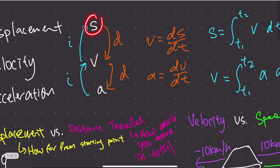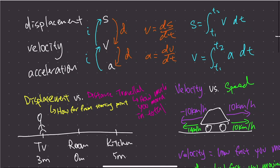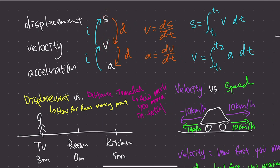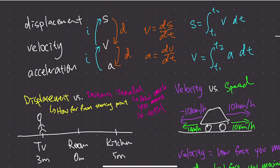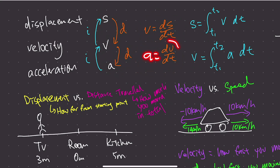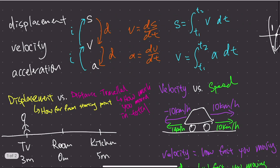To go from displacement to velocity, you differentiate: V = dS/dt. To go from V to A, you differentiate again: A = dV/dt. And the other way around, to go from A to V, you integrate acceleration to get V.